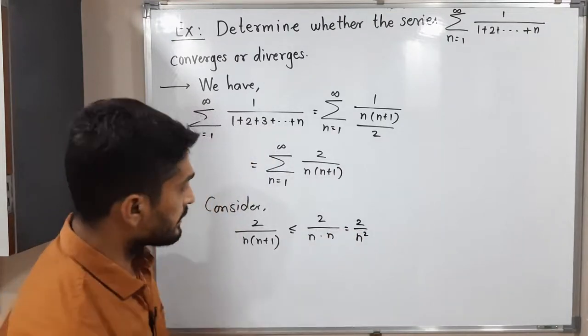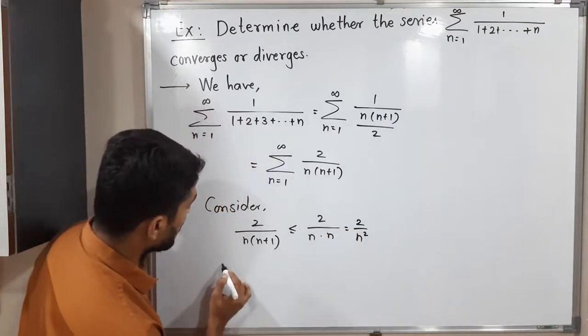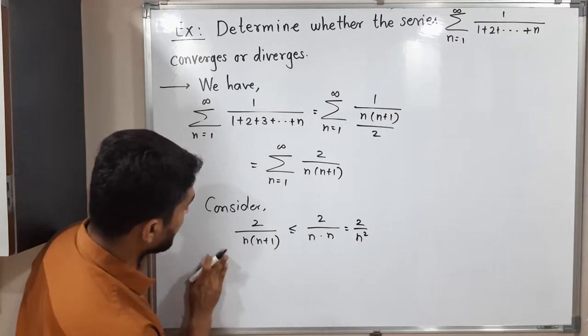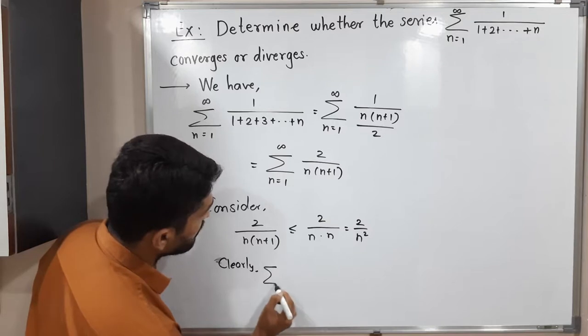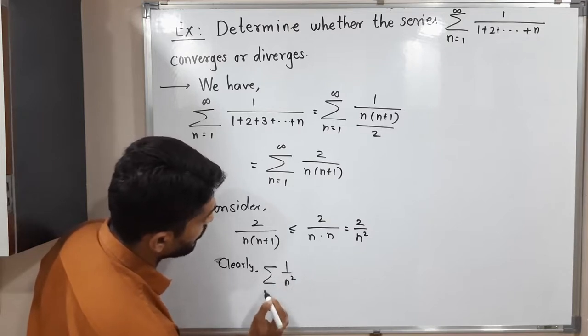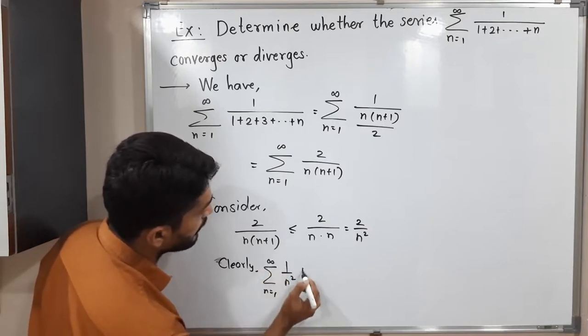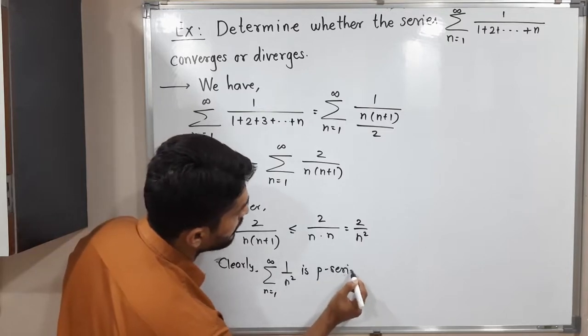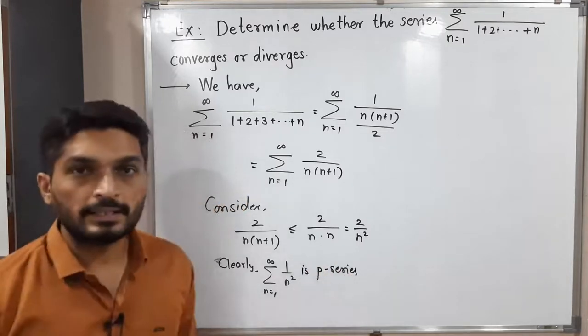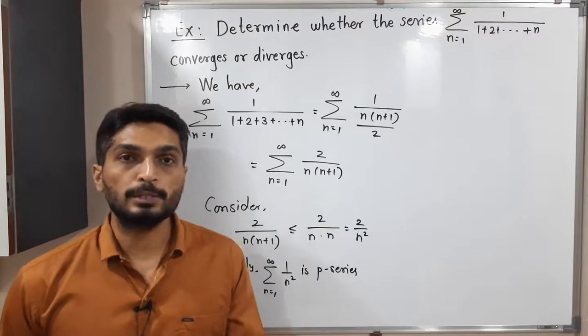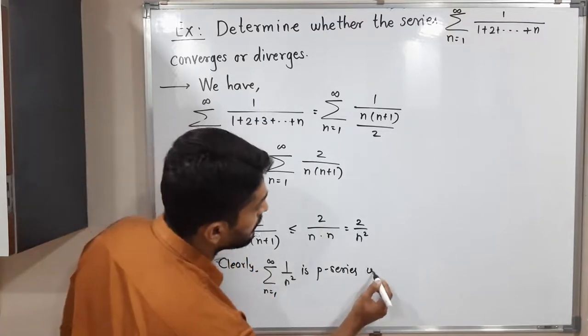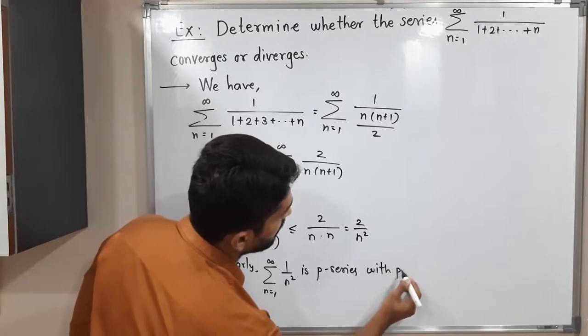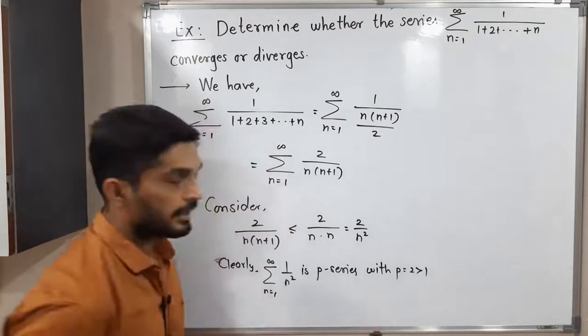Clearly, summation 1/n² where n runs from 1 to infinity is a p-series. This is a series in the form summation 1/n^p. So it is a p-series with p=2, which is greater than 1.